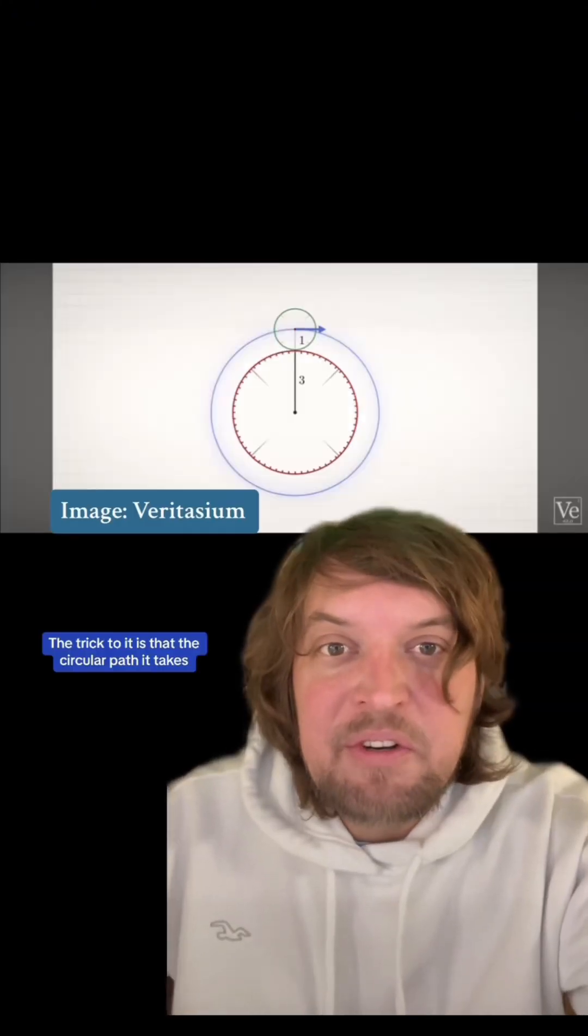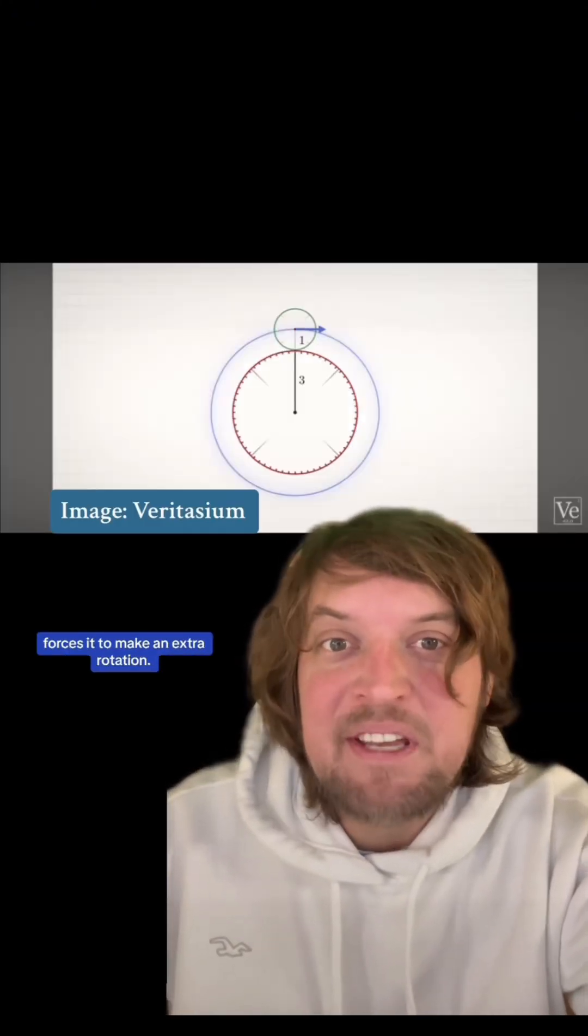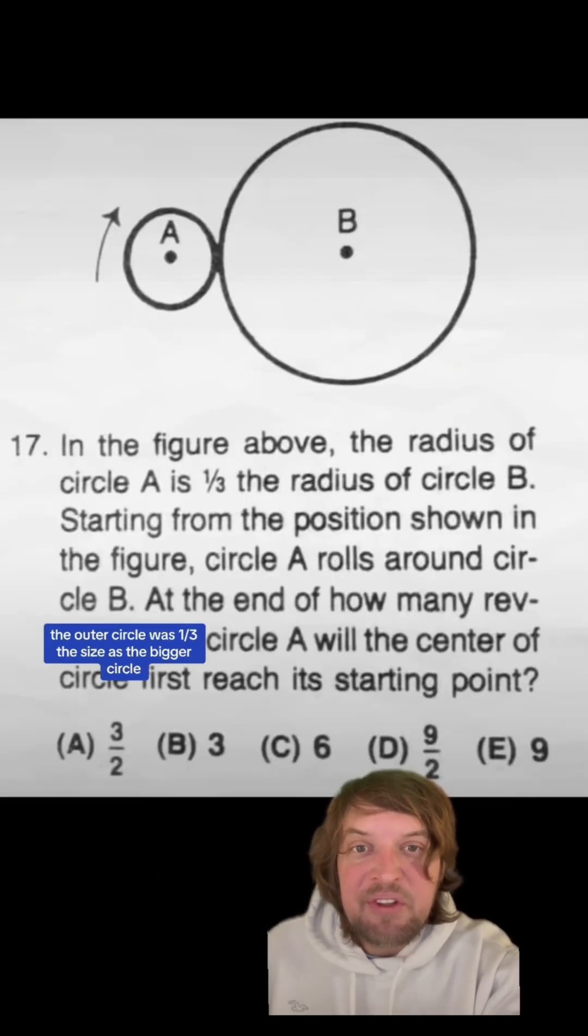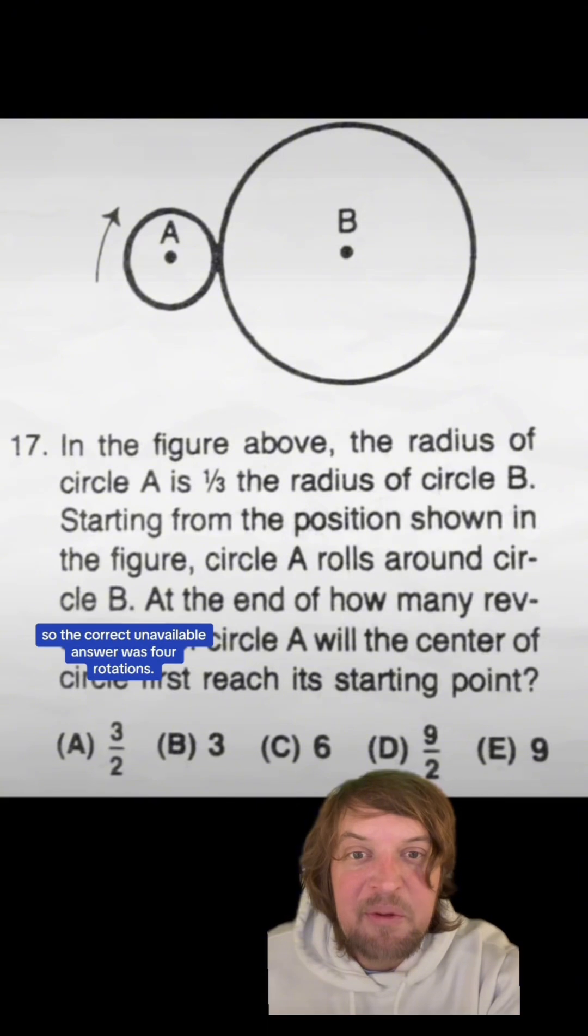The trick to it is that the circular path it takes forces it to make an extra rotation. In that SAT college admissions exam, the outer circle was a third the size as the bigger circle, so the correct unavailable answer was four rotations.